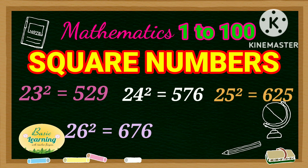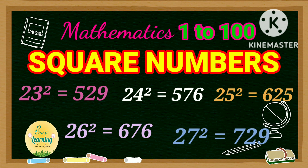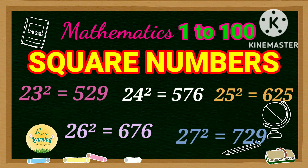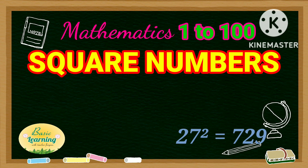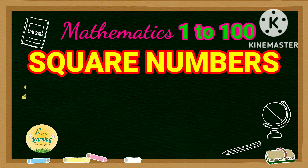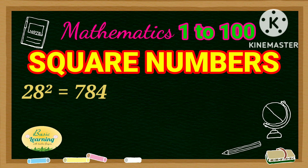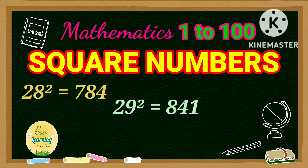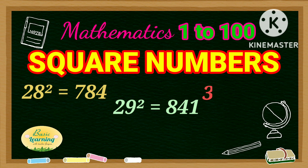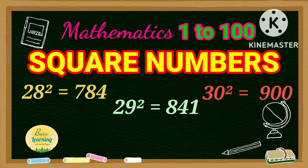Square of 26 is 676. Square of 27 is 729. Square of 28 is 784. Square of 29 is 841. Square of 30 is 900.